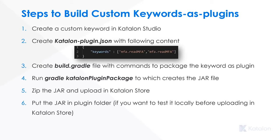You cannot put everything in the Katalon store in one shot because you go through a lot of review process — the Katalon team will check the code and then make it available to the public. But before that, if you want to test it on your own local machine, you can take the jar file and put it in the plugins folder of any other consuming project. You should have another project which is going to consume the jar file — for example, if you're sharing that to the community.